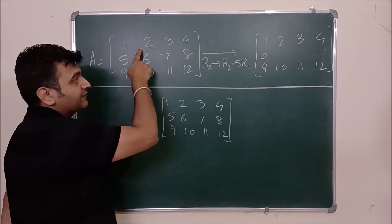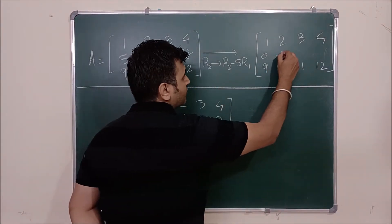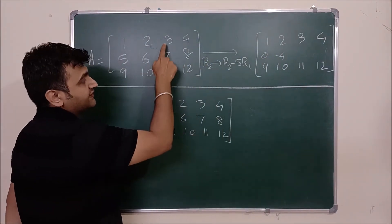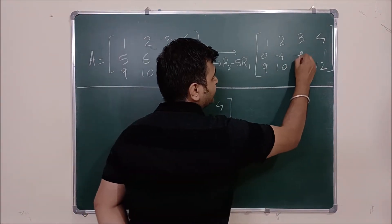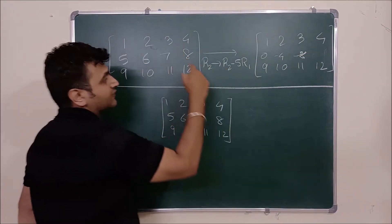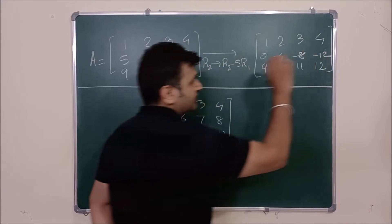6 minus 5 times 2. So it is minus 4. 7 minus 5 times 3 which is minus 8 and 8 minus 20 which is minus 12. So this is what you get.